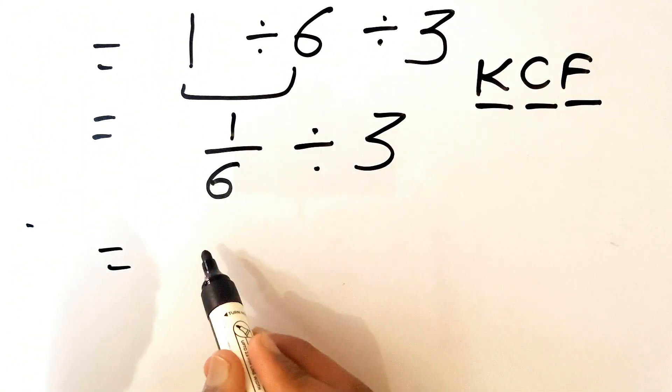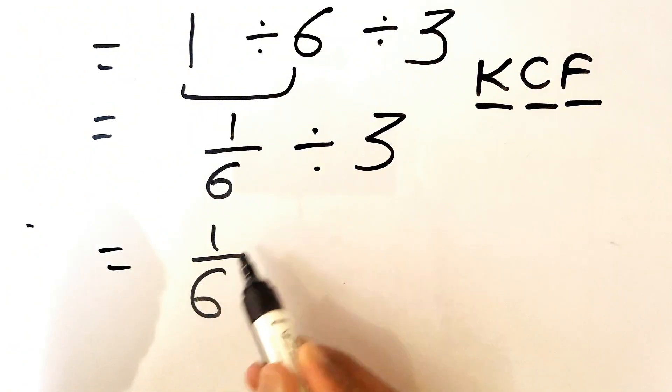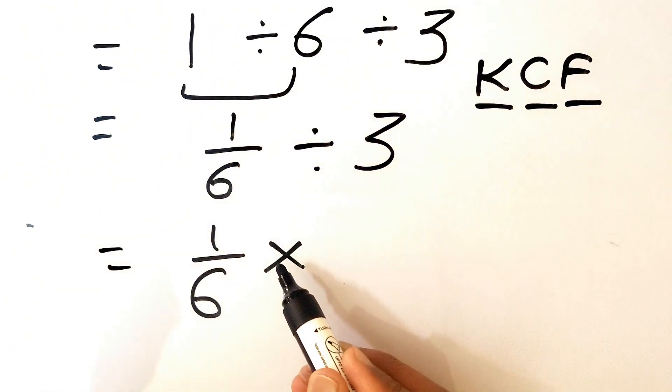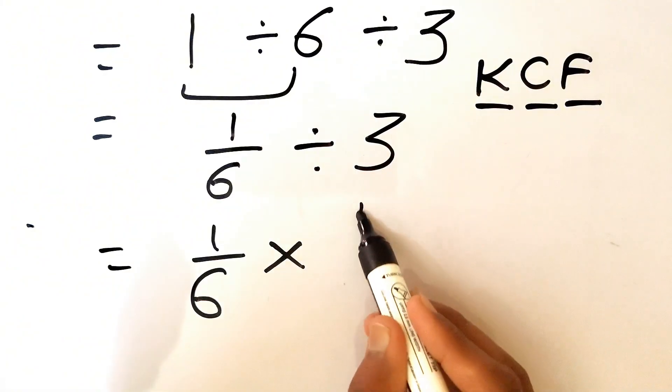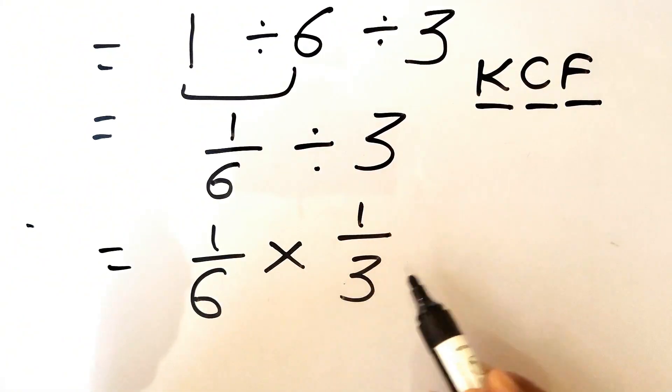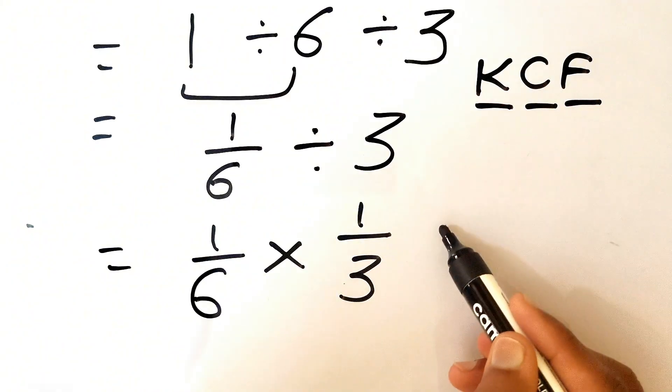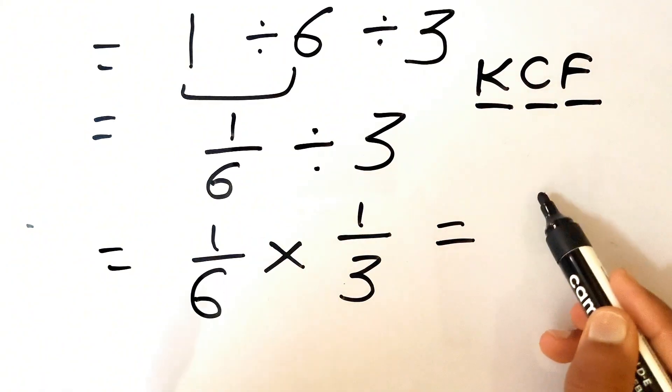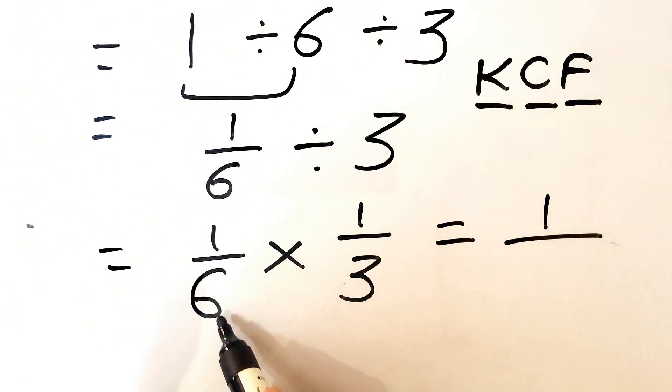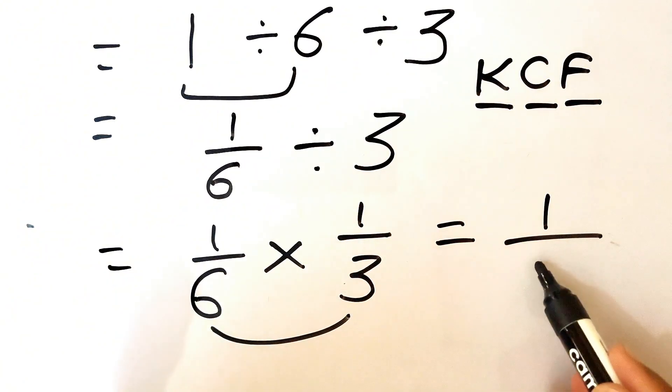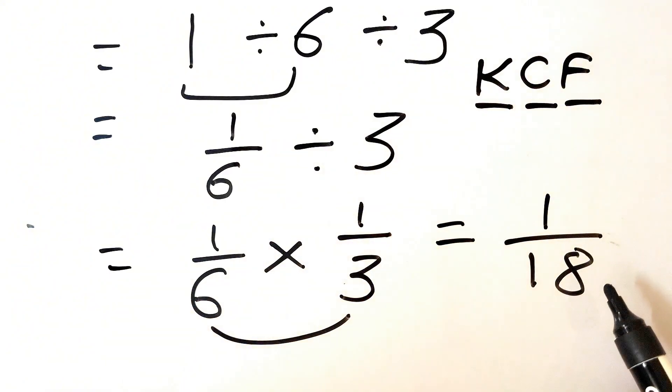So we need to write this 1 over 6 as it is, we need to change the division sign into multiplication, and we need to flip this 3, which becomes 1 over 3. So 1 over 6 times 1 over 3 gives us 1 times 1, which is 1, and 6 times 3 gives us 18.